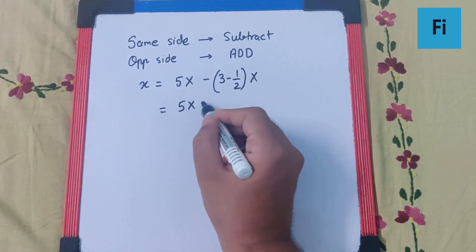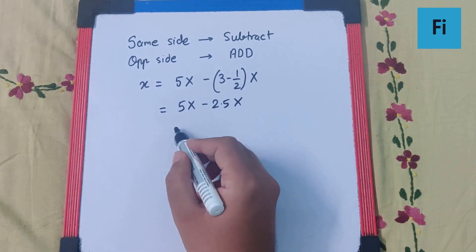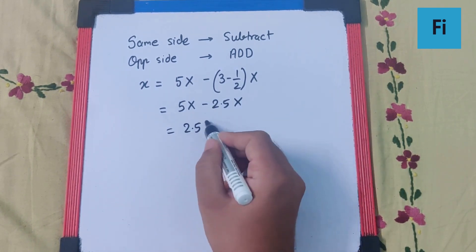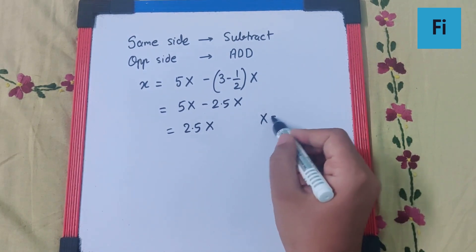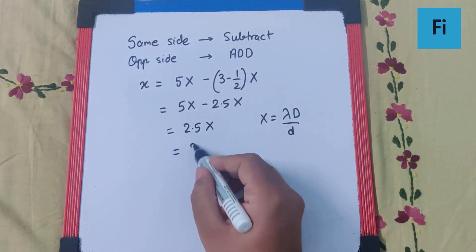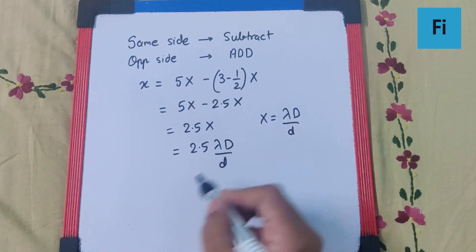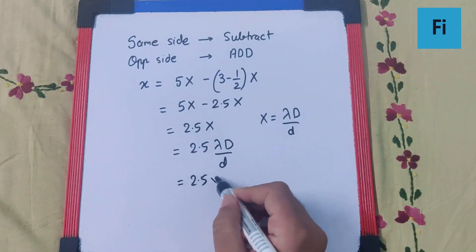5x minus 2.5x, when we subtract, definitely gives 2.5x. Now we know x is the fringe width, which is λD/d. So this becomes 2.5λD/d, that is 2.5 into